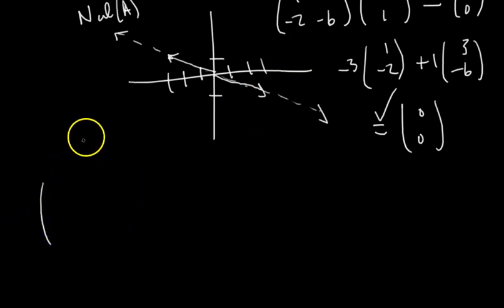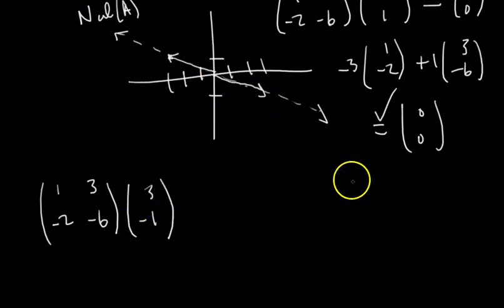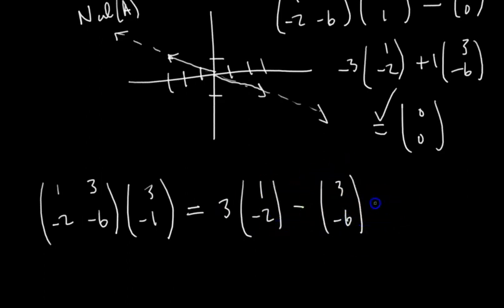So let's see. Does that satisfy the homogeneous equation? We have 1, 3, negative 2, negative 6. There's our A matrix. We multiply it by 3, negative 1. Right? Could have picked any vector along this line. I just picked the vector 3, negative 1. So let's see. This is 3 times 1, negative 2, minus 3, negative 6. And is that 0, 0? It should be 3 minus 3 is 0. And then negative 6 minus negative 6 is negative 6 plus 6. That's 0.